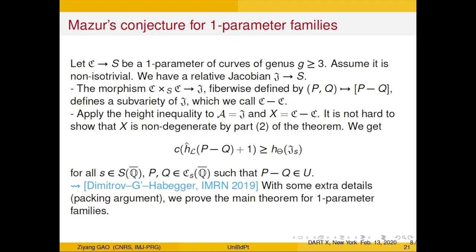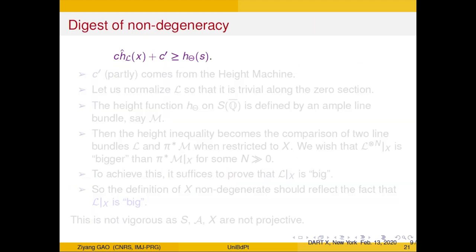This basically proves Masser's conjecture for one-parameter families. Now we need to generalize to arbitrary parameter families of curves, and to prove Masser's conjecture, that arbitrary family will be the moduli space and universal curve. Before going on, let me say something more about this height inequality and about what non-degeneracy means. The key point is: if everything is compact and projective, then height machine theory and big line bundles have a sort of dictionary. The height inequality in geometric terms says that some power of L is bigger than the pullback of M — i.e., L restricted to X is a big line bundle.